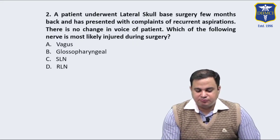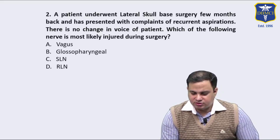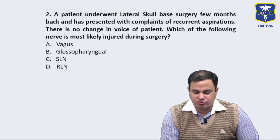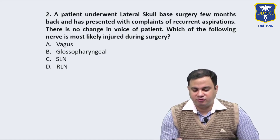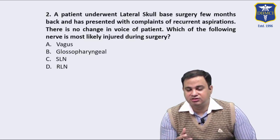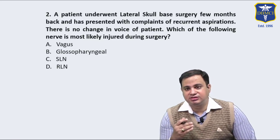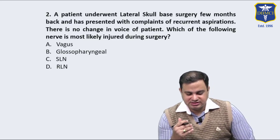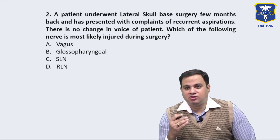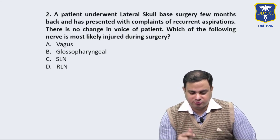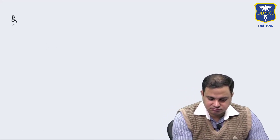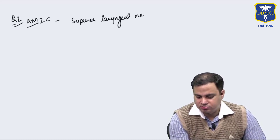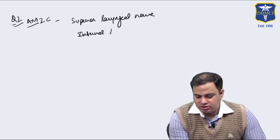Coming to question two: a patient underwent lateral skull base surgery a few months back and presents with recurrent aspirations with no change in voice. Which nerve is most likely injured? We are being asked about the sensory nerve supply of the larynx above the vocal cords. Recurrent aspirations occur with bilateral loss of sensation above the vocal cords, so the answer is C — the superior laryngeal nerve, specifically its internal branch.